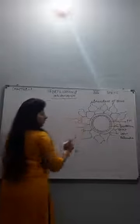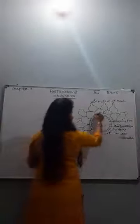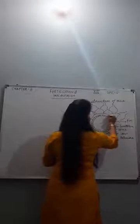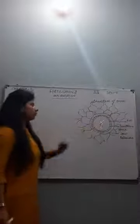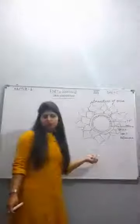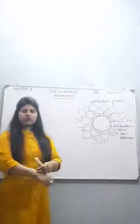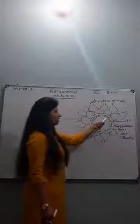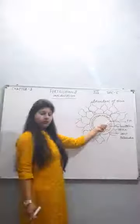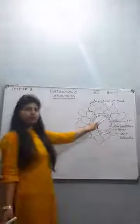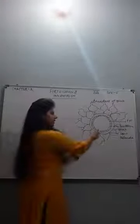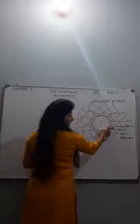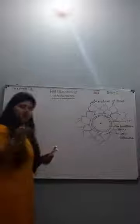Some sperms approach the ovum: some reach only the corona radiata, some reach up to the zona pellucida. This structure of the ovum has been asked in board exams, I think in 2018. The layers from inside out are: cytoplasm, nucleus, plasma membrane, perivitelline space, zona pellucida, and corona radiata.